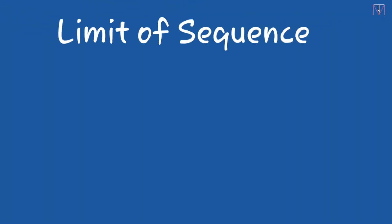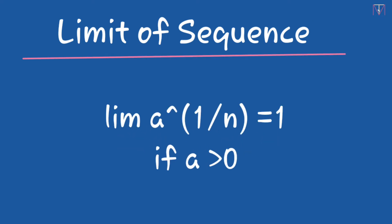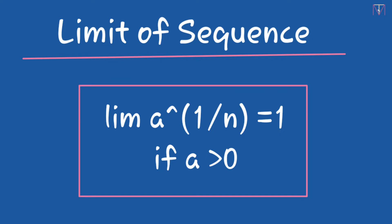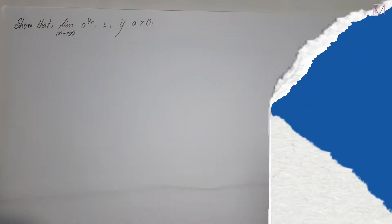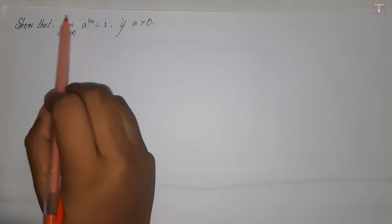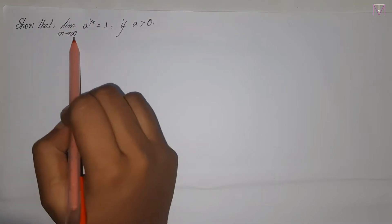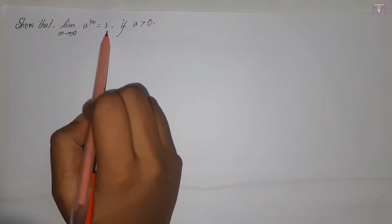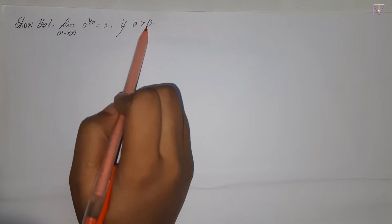Hey guys, today we will discuss an important property of the limit of a sequence. We have to show that the limit as n tends to infinity of a to the power 1 by n is equal to 1, if a is greater than 0.